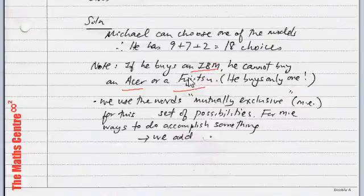So, when you have a situation like this, we refer to these as a mutually exclusive set of possibilities. That means, if you do one, you cannot do the other. For mutually exclusive ways to accomplish something, we have to add. We have to add. So, I added nine plus seven plus two. I have got 18 choices. Please bear this in mind.